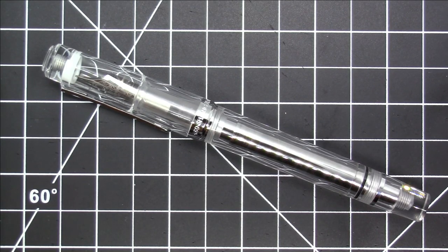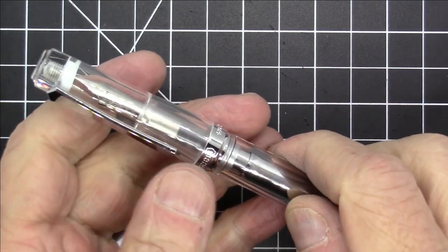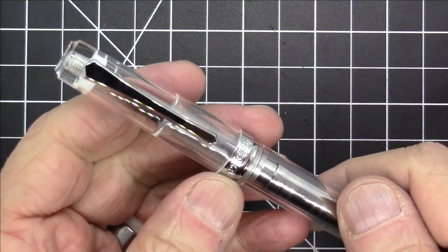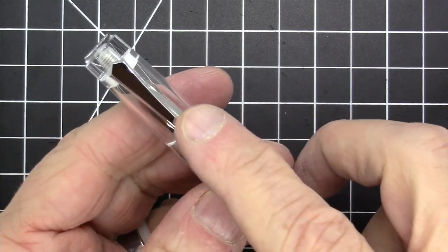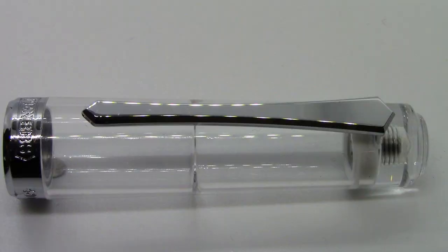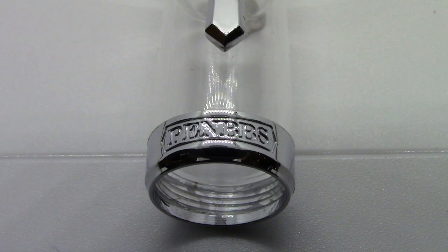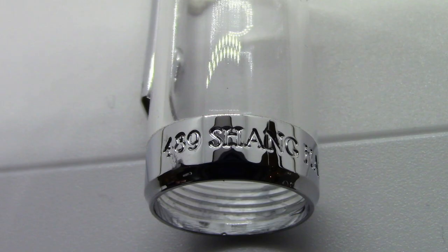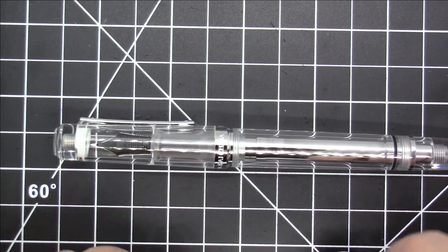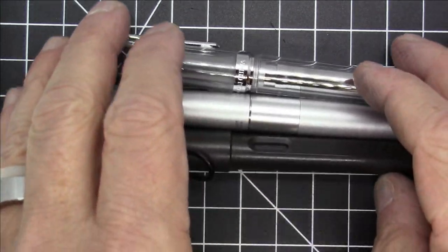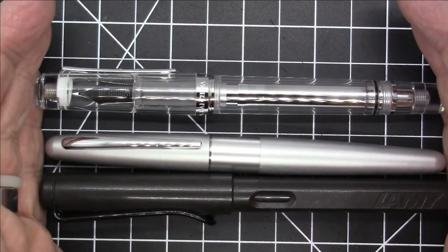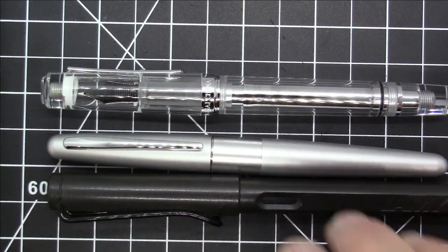You'll be able to share in that experience. In terms of Pen BBS pens go, it's fairly typical. This is obviously the clear demonstrator version. It has the Pen BBS sword style clip, it has a cap band that says Pen BBS and then it says 489 Shanghai China. In terms of overall size, here it is compared to a Lamy Safari and a Pilot Metropolitan. Very conventional traditional size pen.